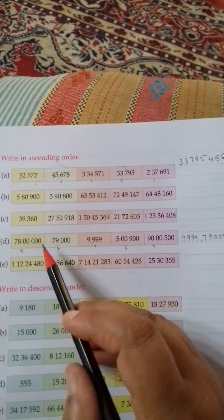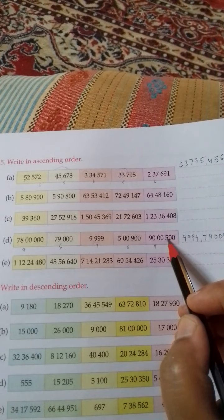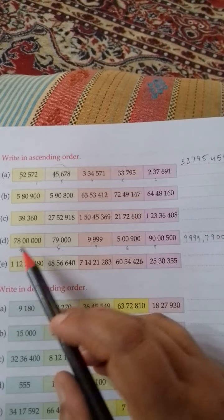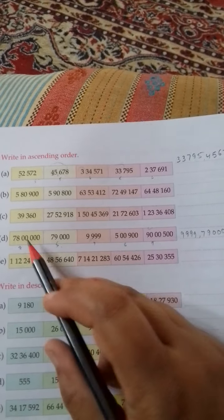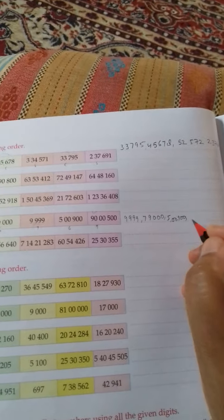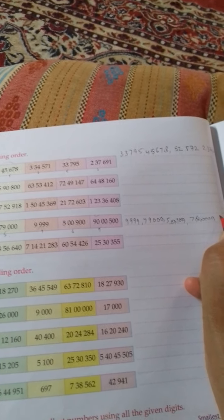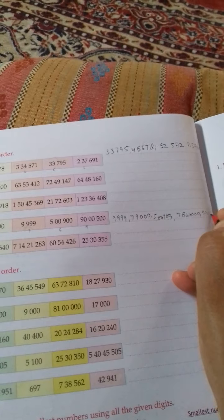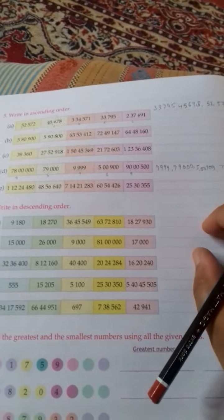But there are 2, so let's compare them. Both start with 1 at the ten lakh's place. Now it is starting with 7 and starting with 9, so this is greater and this is smaller. First you will write 7, 8, 0, 0, 0, 0, 0. Then 9, 0, 0, 0, 5, 0, 0. Write in smaller writing; my writing is taking so much of space.